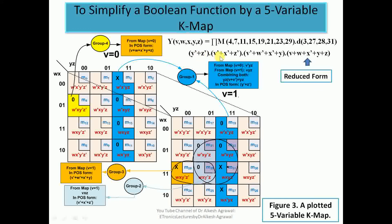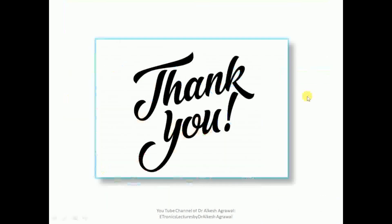The complete reduced POS expression is: (Y̅+Z̅) · (V̅+X̅+Z̅) · (V̅+W̅+X̅+Y) · (V+W+X̅+Y+Z). This concludes the lecture on five-variable K-maps with don't care conditions. Thank you.